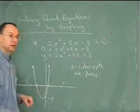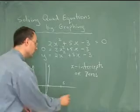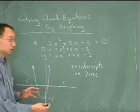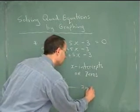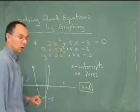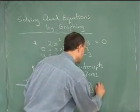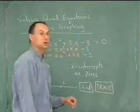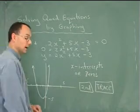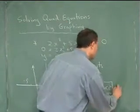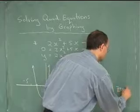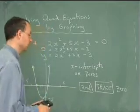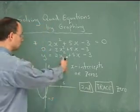To find these specific points on the Texas Instruments, we end up having to, first of all, graph the equation, get our picture. And then you go second function, followed by trace. And that pulls up a whole bunch of different choices. And the one that we're after is number 2, which says 0. You make that choice, and then it goes back to the graph screen.